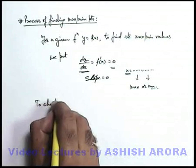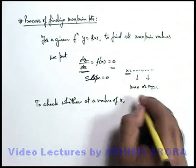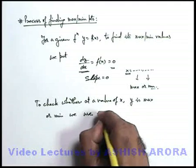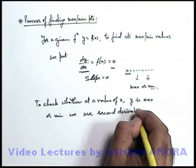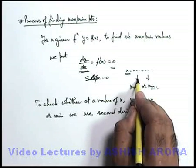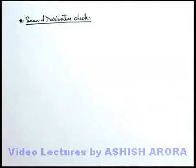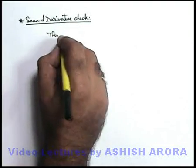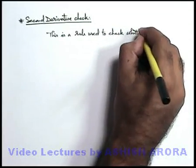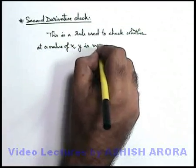Now, to check whether at a value of x, y is maximum or minimum, we use another method. We call it the second derivative check. Using this second derivative check, we can easily determine that at a particular value of x where the slope is becoming zero, whether it is maxima or minima.